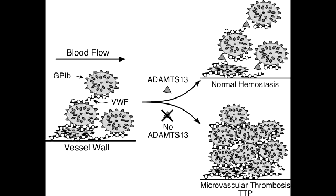What is the symptoms pentad of thrombotic thrombocytopenic purpura? The symptoms pentad — meaning five symptoms of TTP — includes neurologic and renal symptoms, fever, thrombocytopenia, and microangiopathic hemolytic anemia.